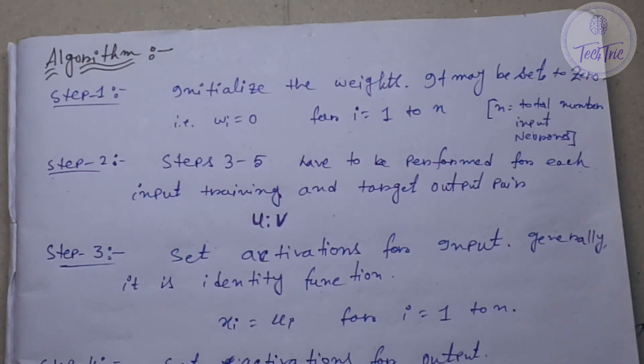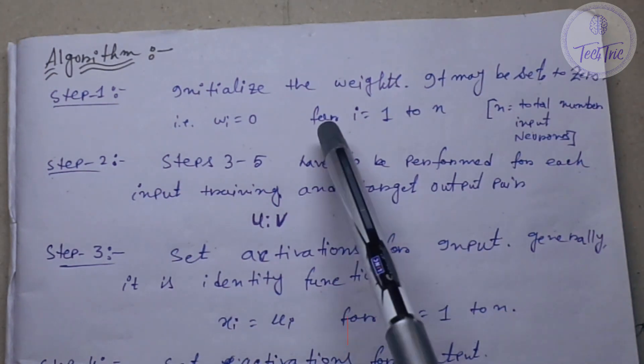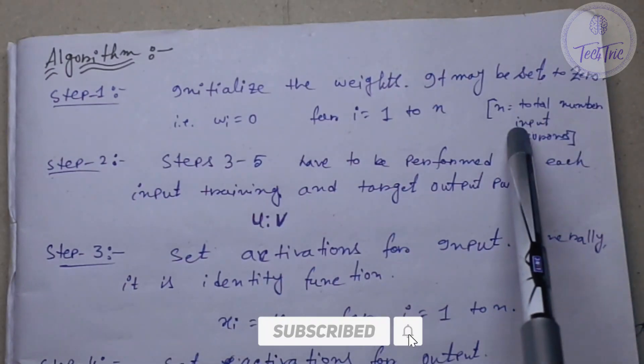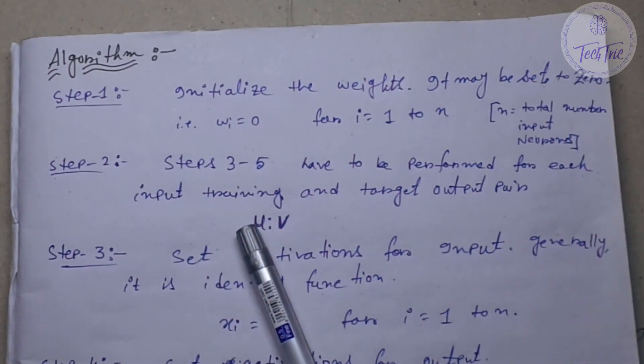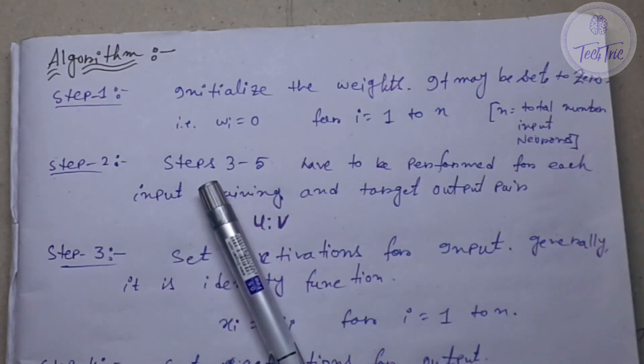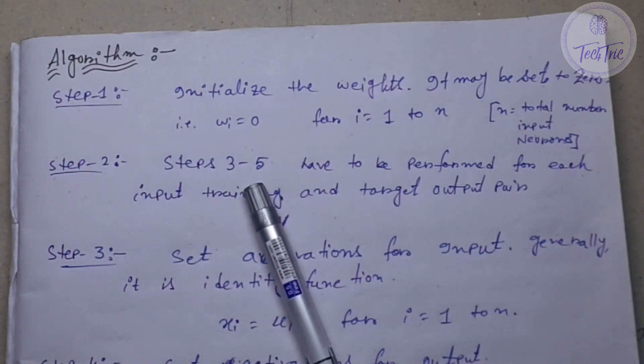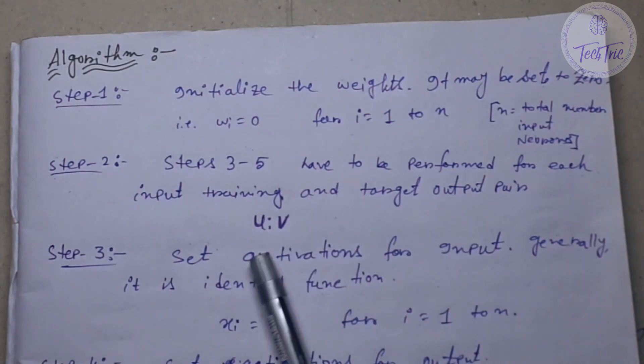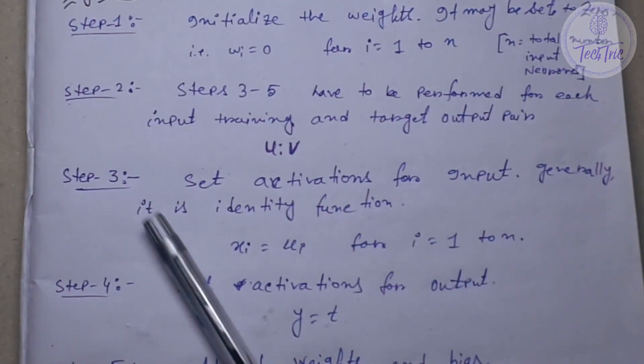Step 2 is saying that we have to perform from step 3 to step 5 for each input training and target output pair. For step 3, it is saying we have to set activation function for input. Generally it is identity function, that is U_i will be set to X_i for i equal to 1 to n.